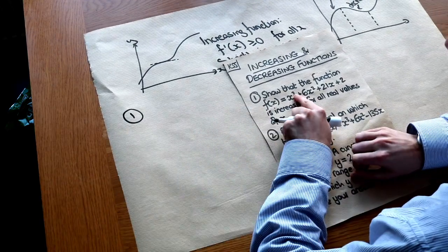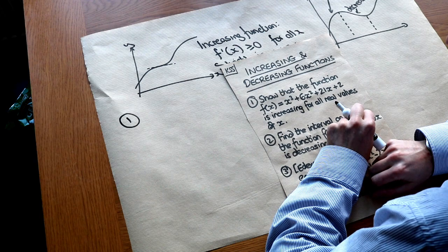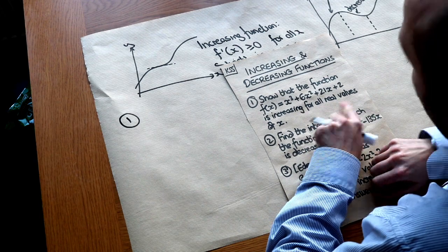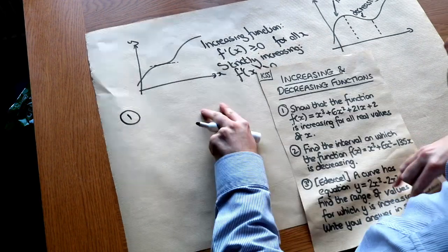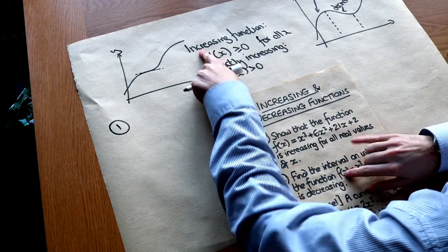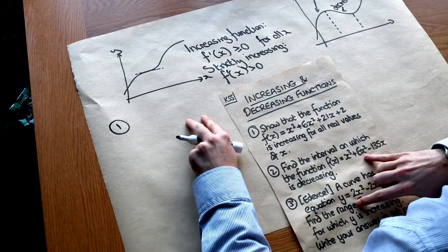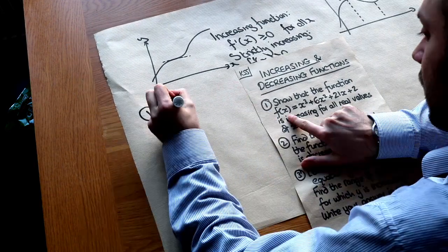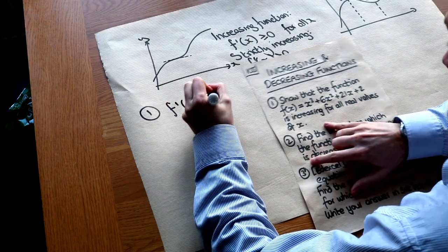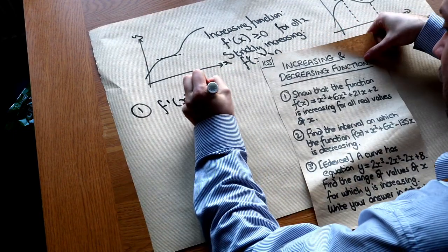The first question: show that the function f(x) = x³ + 6x² + 21x + 2 is increasing for all real values of x. We're going to use the definition that it's an increasing function if the gradient is always greater than or equal to zero. So let's find f′(x), the gradient function. x³ differentiates to 3x².